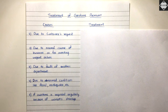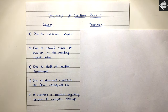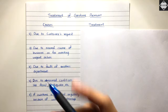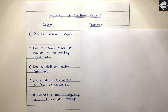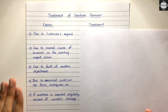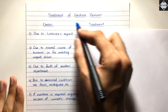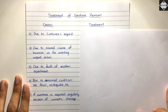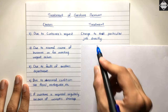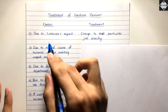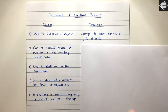Cause 1: Due to a customer's request. If a customer places an urgent order that must be fulfilled within one or two days, which isn't possible in the normal course of business, we have to make workers do overtime to fulfill that order. In this case, whatever overtime premium is paid to workers must be charged directly to that particular job as direct labor cost of that customer's job.